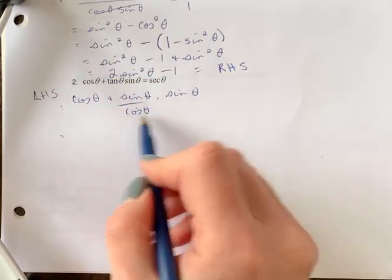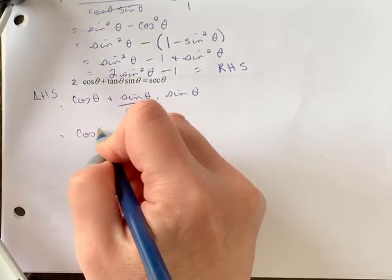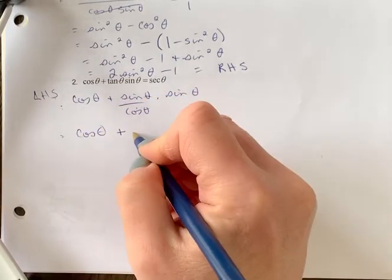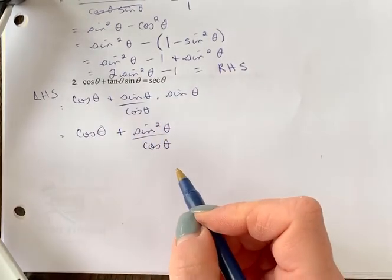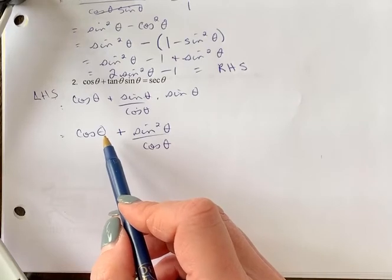Next step: nothing cancels, but we can multiply these together. So we've got cos θ still here. Sin θ times sin θ is sin²θ over cos θ. Now follow what the question is telling us to do - it says to add.